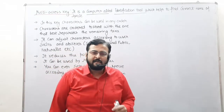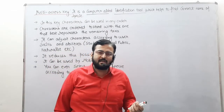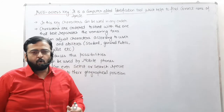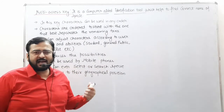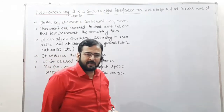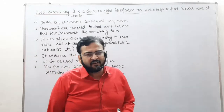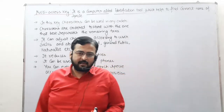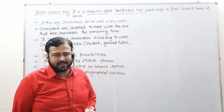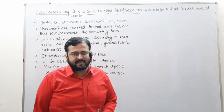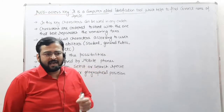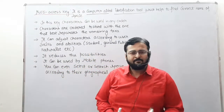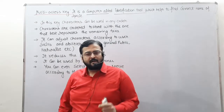Before this, we had Dichotomous, Branched, and Bracketed — different types of keys. The multi-access key is highly advanced and helps you identify any species. These keys can be easily operated by mobile or laptop, and they help you find the name of any given species.